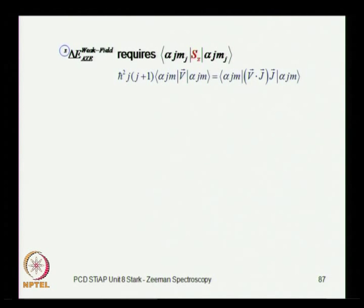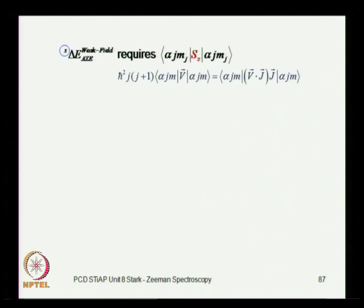That is what led us to determine the perturbative correction to the original unperturbed energy. This correction requires us to determine the matrix element of SZ. The difficulty here was that the quantum states we are considering are eigenstates of J² and JZ, and not of SZ.